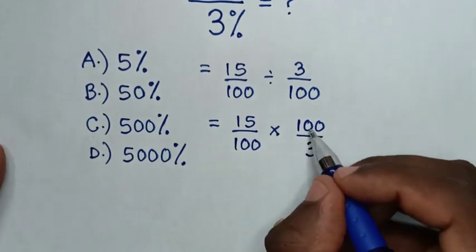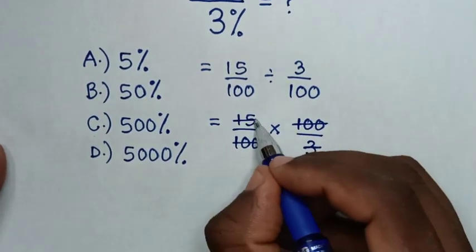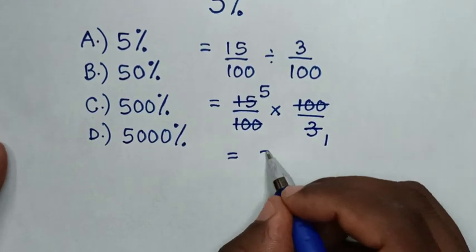Then to simplify, this will cancel with this, and here this by 1 and this by 5, so it will be equal to 5.